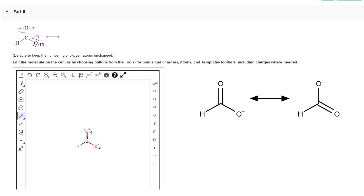So to do that we need to convert one of the lone pairs on oxygen 2 to a pi bond and we need to push that pi bond between carbon and oxygen 1 to a lone pair on oxygen 1.